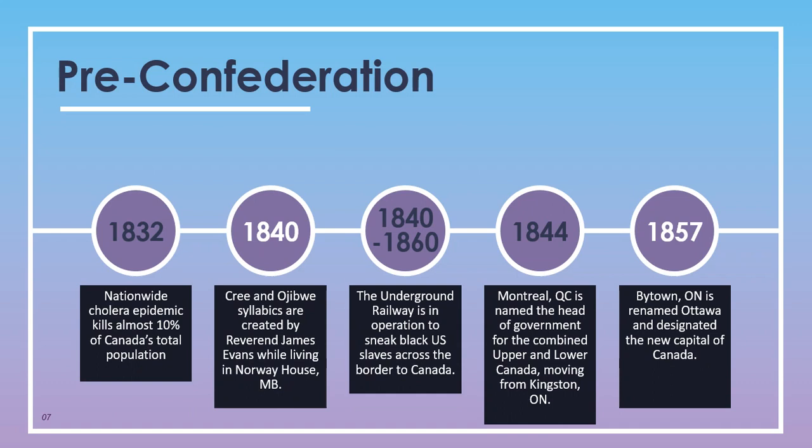In 1832, a countrywide cholera epidemic killed almost 10% of Canada's entire population at the time, both indigenous and non-indigenous. In 1840, Cree and Ojibwe syllabics were created by a Jesuit reverend named James Evans while living in Norway House, Manitoba. Before this, indigenous people did not have a writing system — everything was communicated through oral histories — and now Reverend Evans introduced a system of writing to some of Canada's indigenous groups.